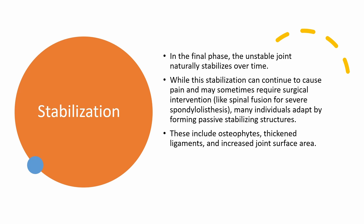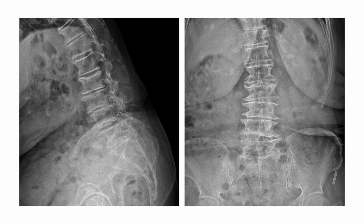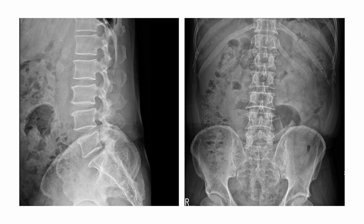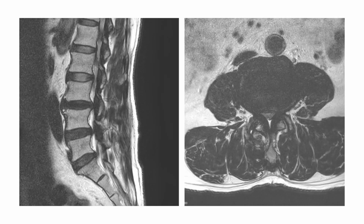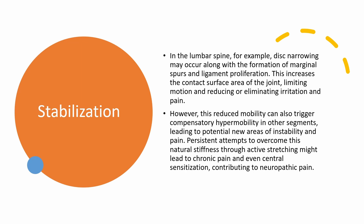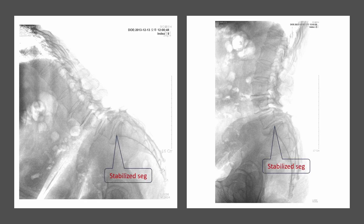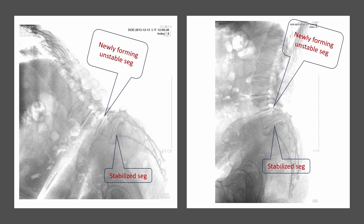In the stabilization phase, a previously unstable joint naturally evolves to a more stable state over time. This progression, however, could persistently cause discomfort and, in some instances, necessitate surgical intervention. Many individuals naturally adapt by developing passive-stabilizing structures like osteophytes, thickened ligaments, and an expanded joint surface area. In the lumbar spine, the onset of conditions such as disc narrowing, marginal spurs, and ligament proliferation serves to increase the joint's contact surface area, restricting motion and minimizing both irritation and pain. However, the downside to this reduced mobility is the likelihood of triggering compensatory hypermobility in other segments, which can consequently lead to the emergence of fresh areas of instability and discomfort.